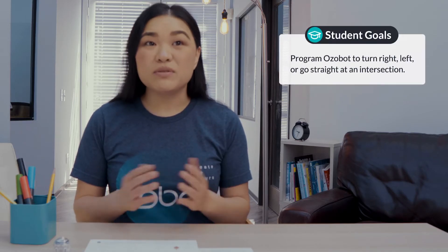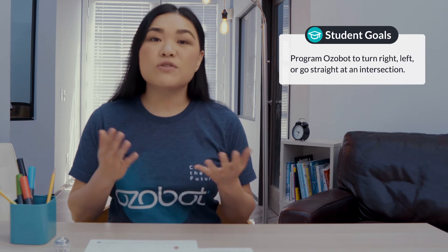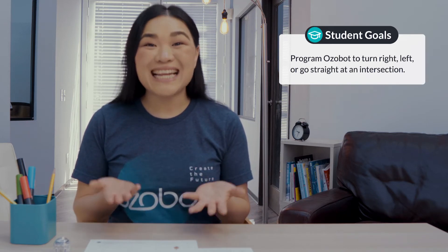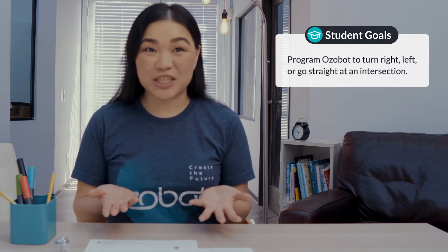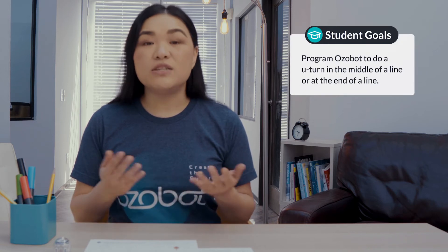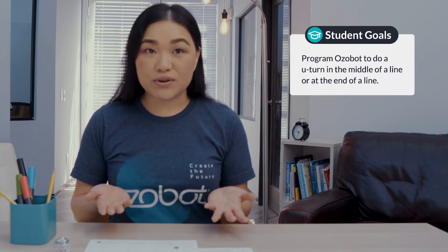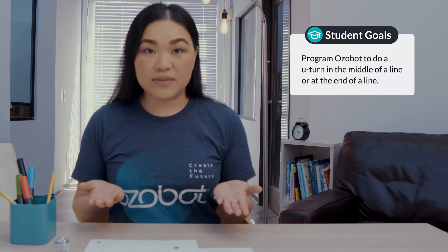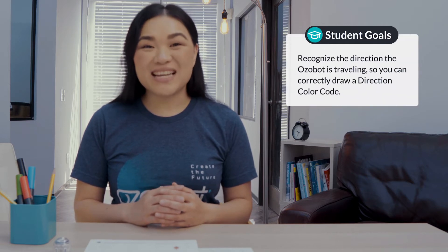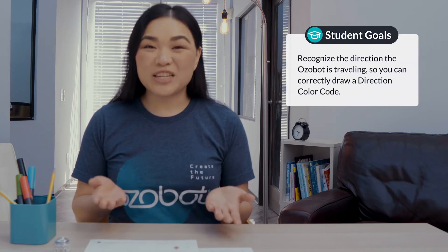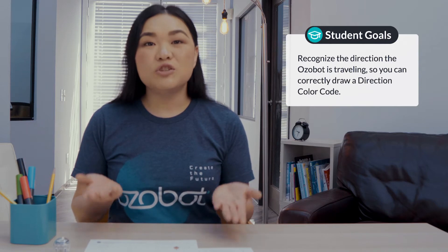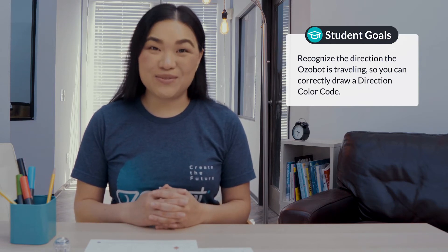After today's lesson you will be able to program Ozobot to turn right, left, or go straight at an intersection, program Ozobot to do a U-turn in the middle of a line or at the end of the line, and recognize the direction that Ozobot is traveling so that you can draw a direction color code.